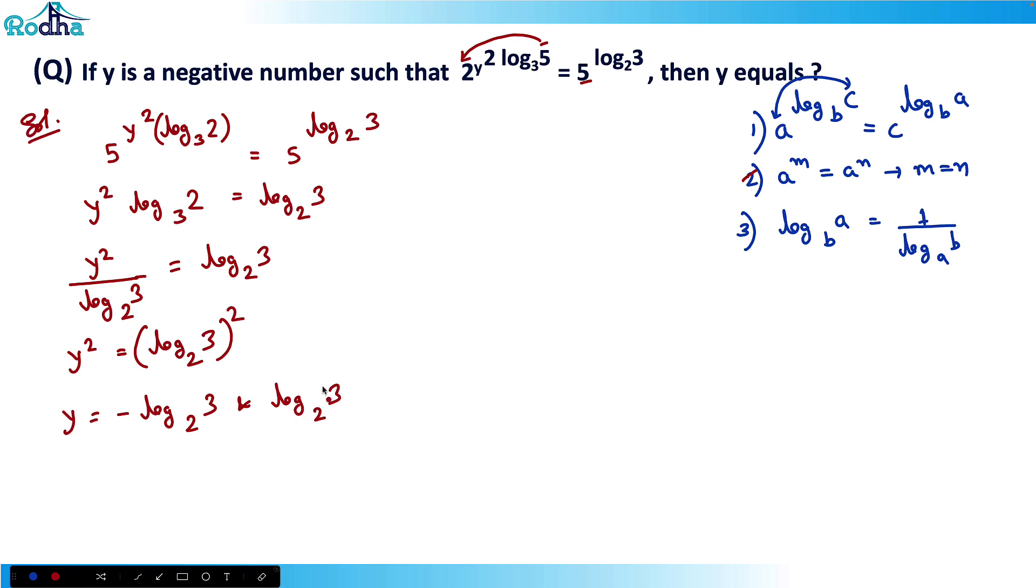So I know that log 3 base 2 result will be positive because 3 is more than 2 here. That result is always positive. So once this result is positive, that basically means that I need a y is a negative number here, that means this result can be discarded.